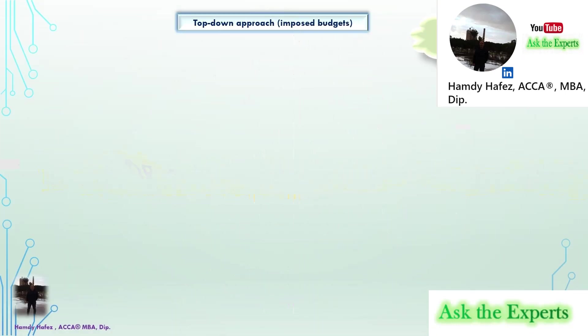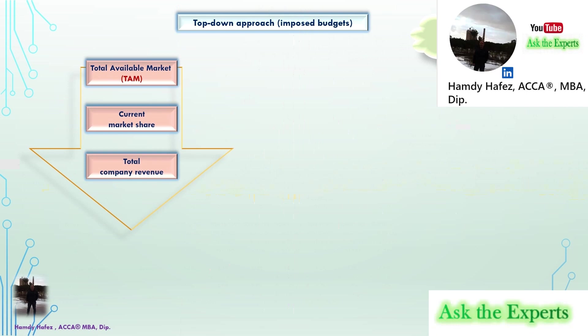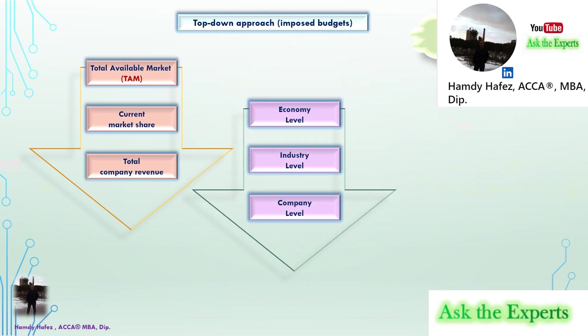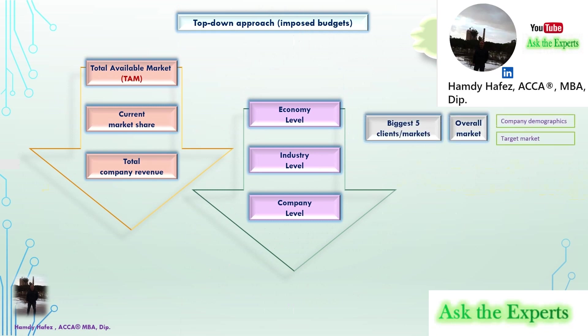As we said last episode, in the Top-Down Approach, we begin our sales planning at the Total Available Market, or TAM, then the Company Current Market Share, and finally the Total Company Revenue. Another way, you can begin at the Economy Level, then the Industry Level, and finally at Company Level. Also, we stated that if supply is more than product demand, the Top-Down will be the best fit approach to use.